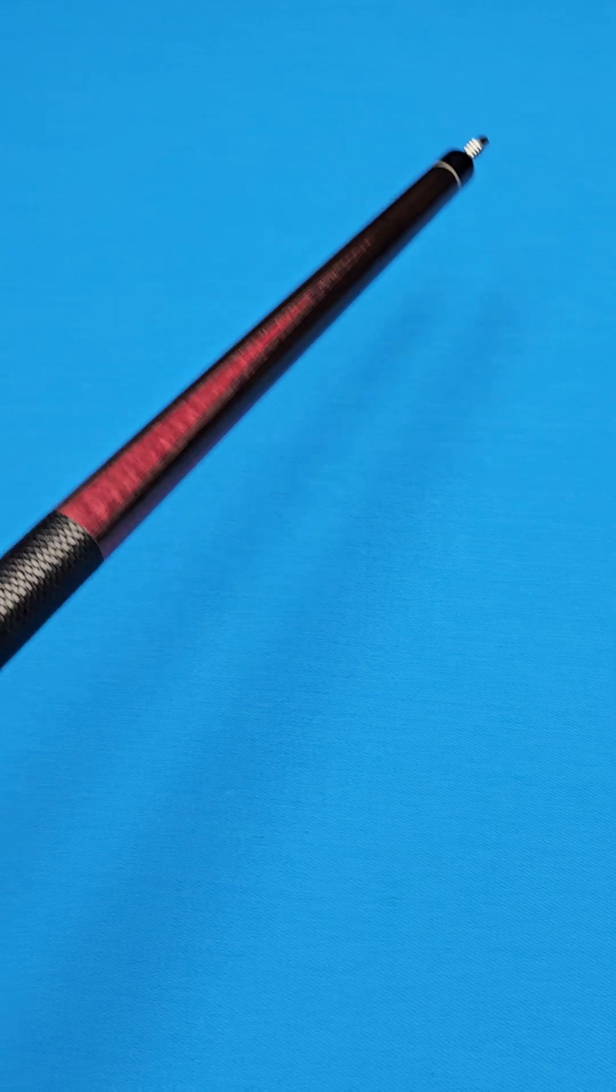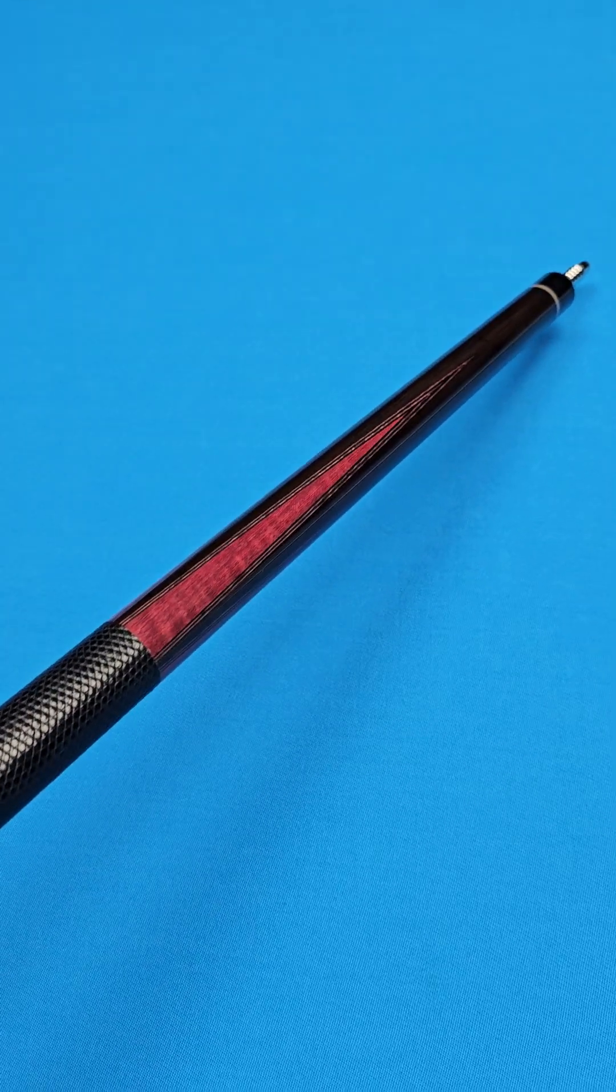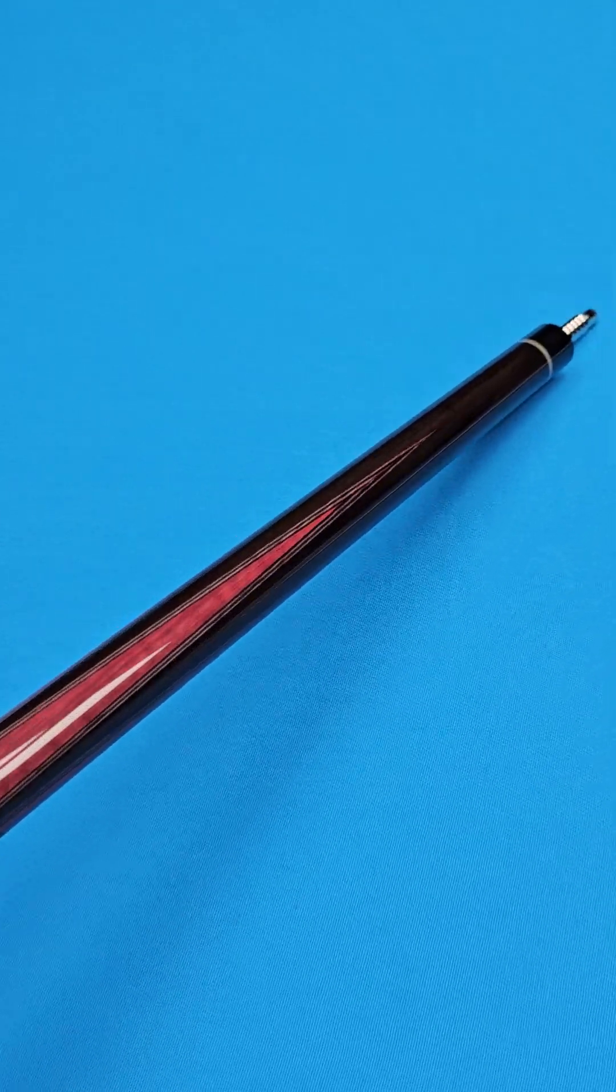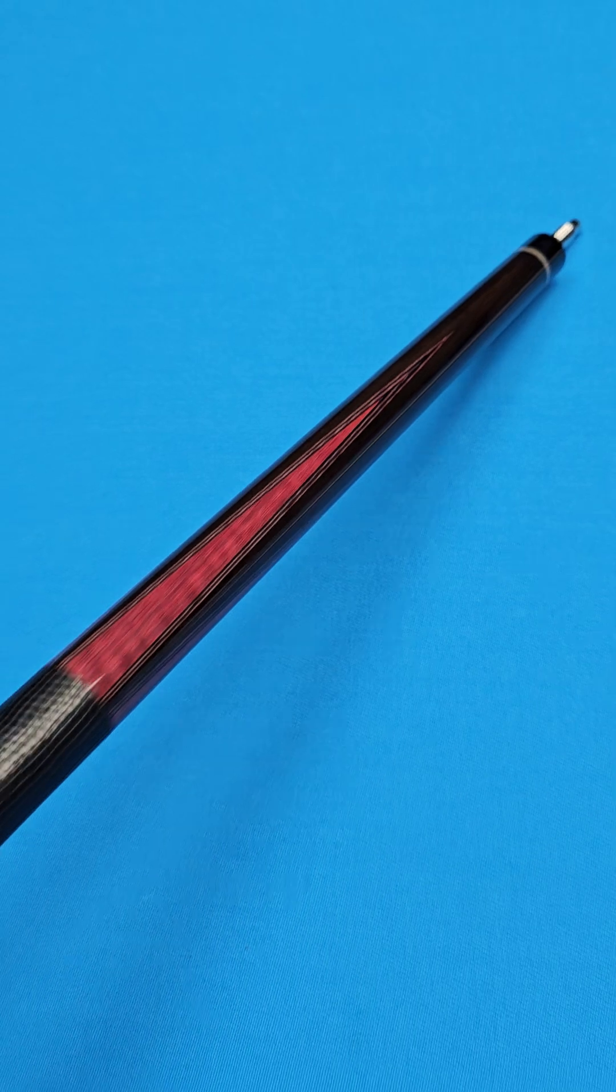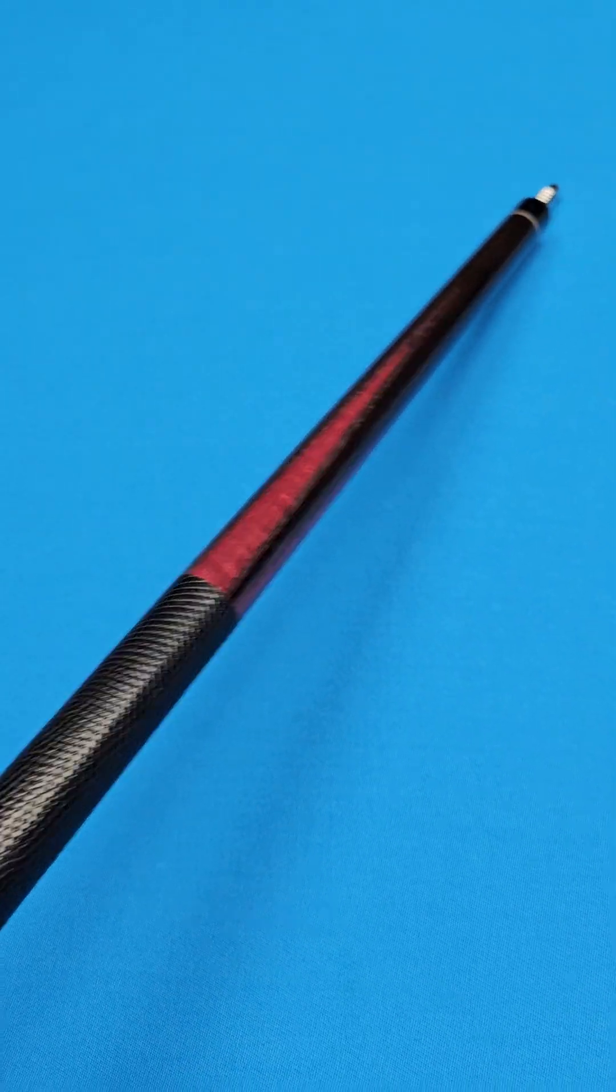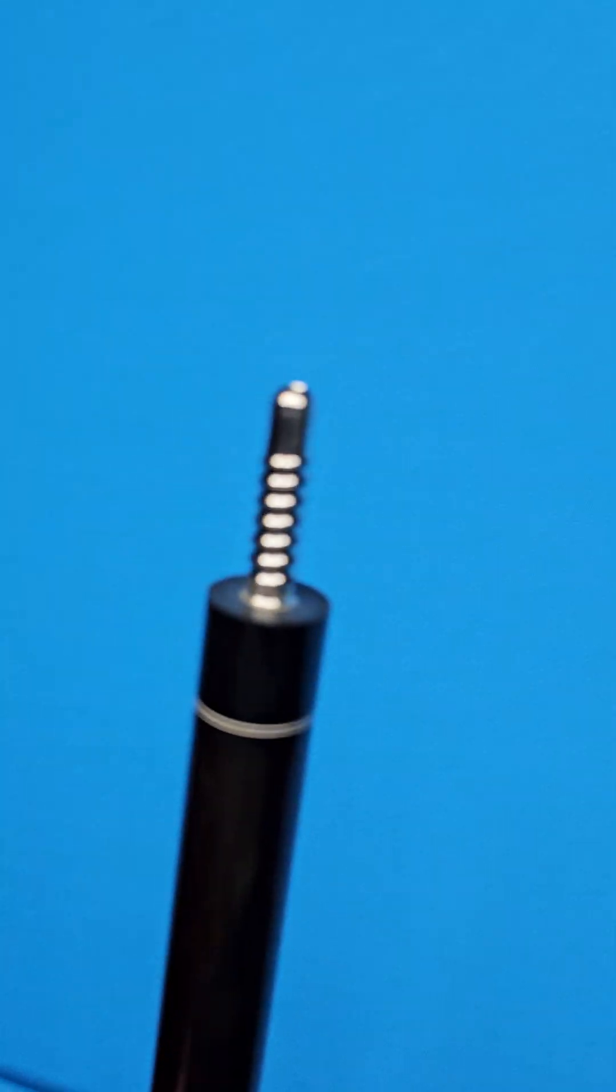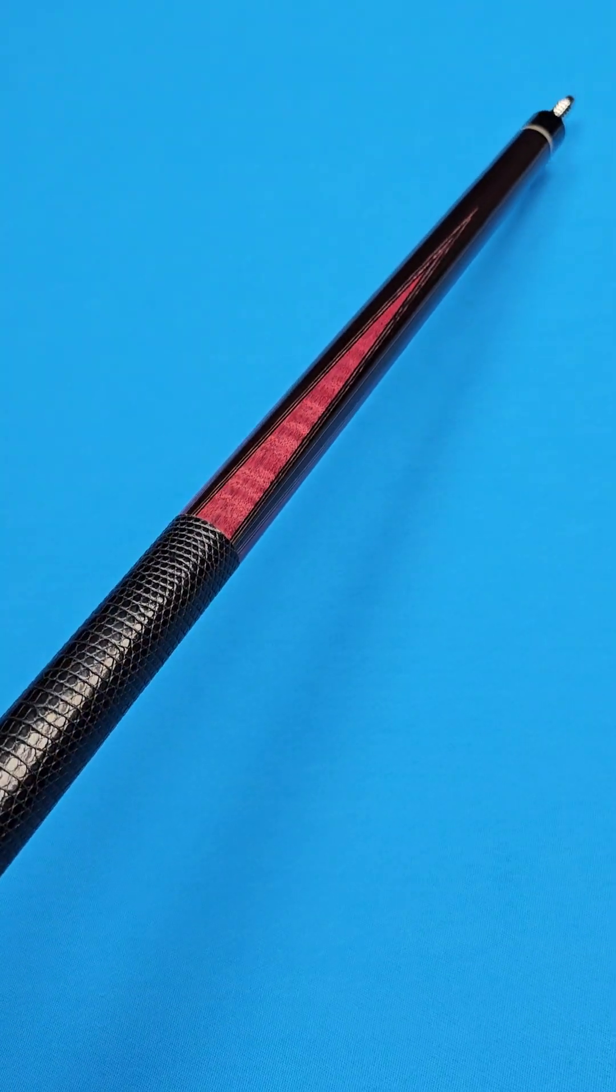Rick builds the old-fashioned way. This cue is a solid ebony forearm. He does not core his cues. You're going to get an extremely solid hit out of a Felipe, and this one is no exception.